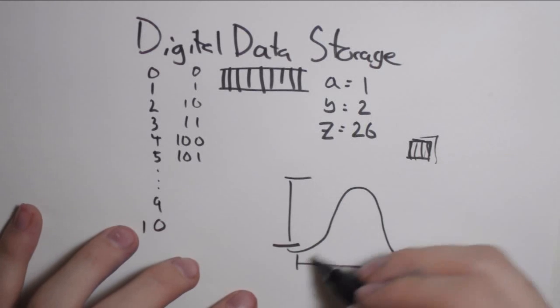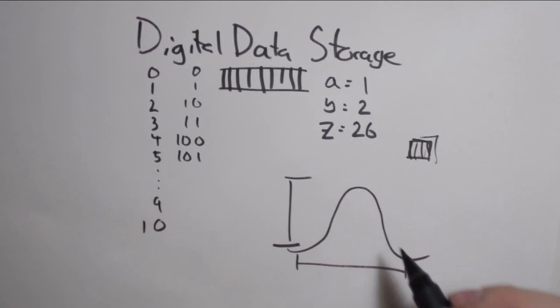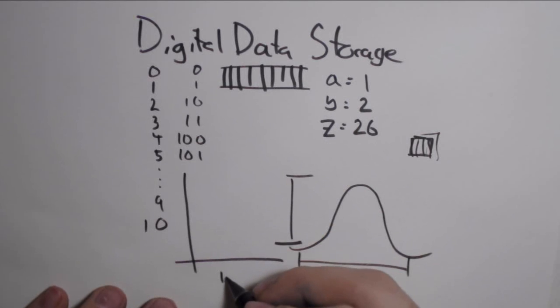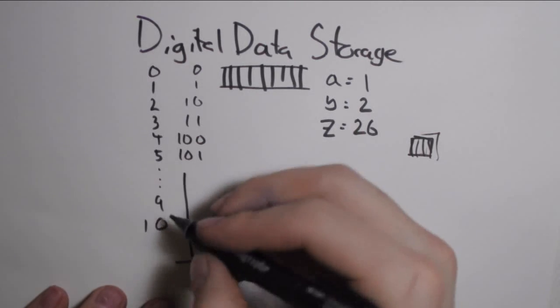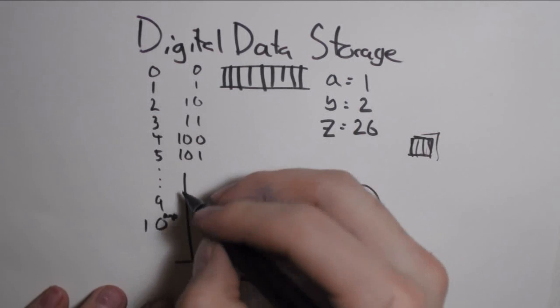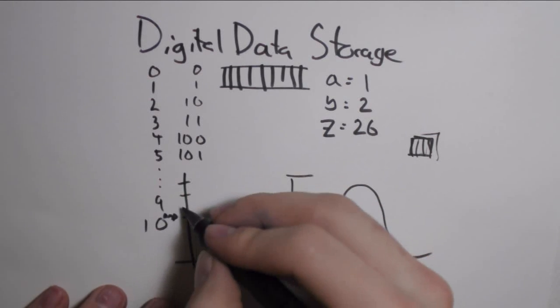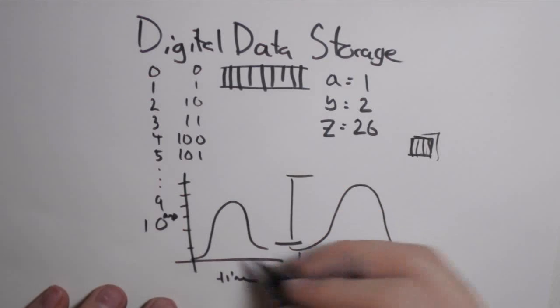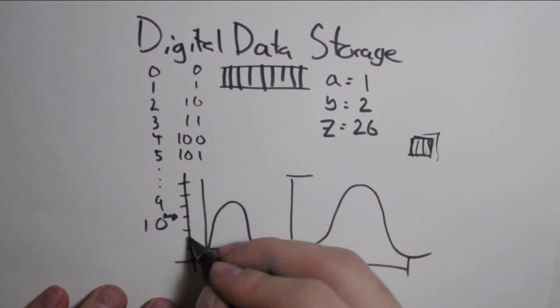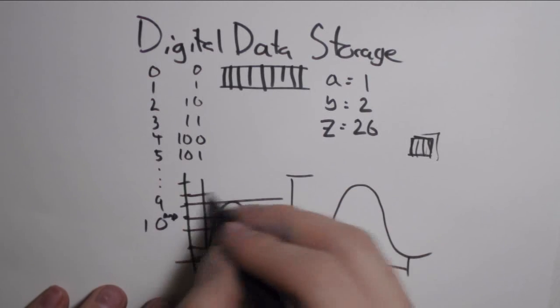In a computer, you can't store something smooth like this in a really simple way. The way a wave is stored is you've got a plot, basically. You've got time on one end and amplitude on the other, and you've got your wave in there. The computer basically takes this wave and subdivides it into a grid.